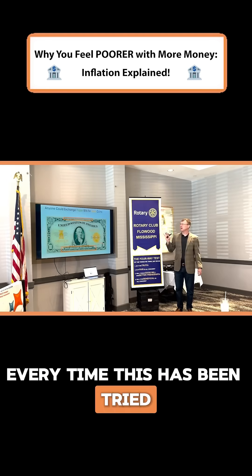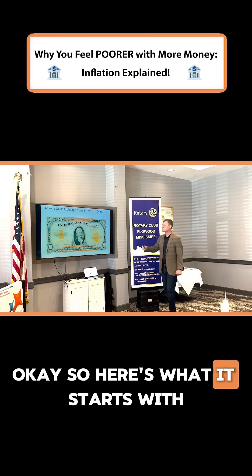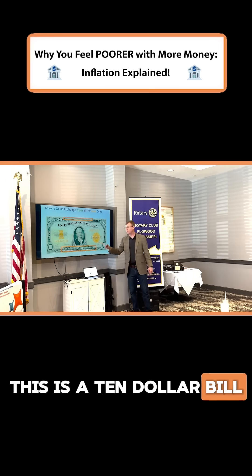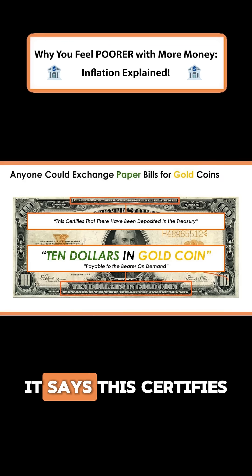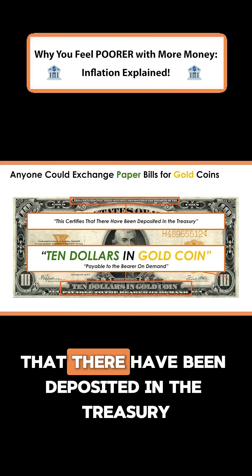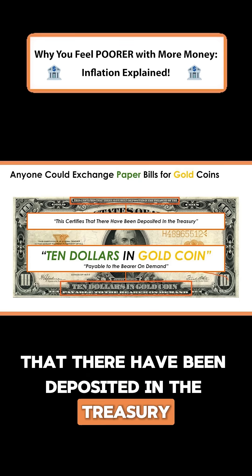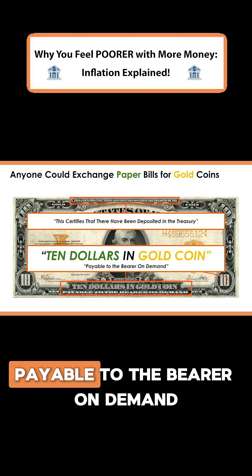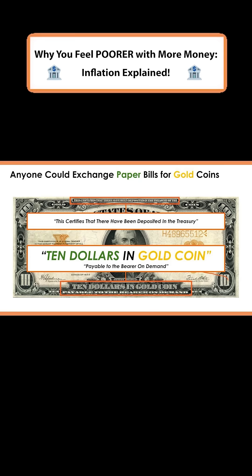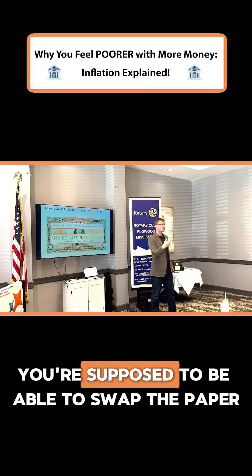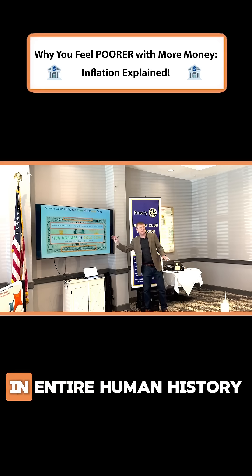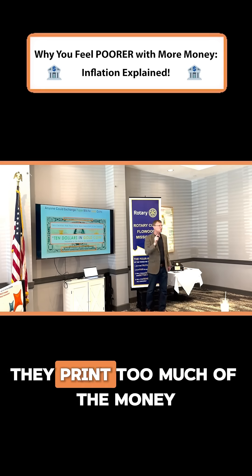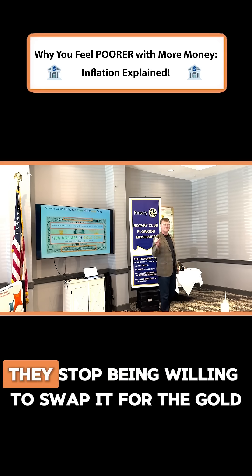Every time this has been tried, the same thing has happened. So here's what it starts with. This is a $10 bill. If you zoom in on that $10 bill, it says: 'This certifies that there have been deposited in the treasury $10 in gold coin payable to the bearer on demand.' That means you're supposed to be able to swap the paper for the gold anytime you want. But every time humans have ever done this in entire human history, they print too much of the money and eventually they stop being willing to swap it for the gold.